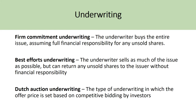There are three types of underwriting procedures. Firm commitment underwriting is where the underwriter buys the entire issue, assuming full financial responsibility for any unsold shares. Best efforts underwriting is when an underwriter sells as much of the issue as possible but can return any unsold shares to the issuer without financial responsibility — for example, if a company wanted to sell 400 shares and the bank only sold 300, the remaining 100 are returned with no financial penalty, making this procedure generally favored by investment banks. The Dutch auction underwriting procedure is a newer approach where the offer price is set based on competitive bids by investors.